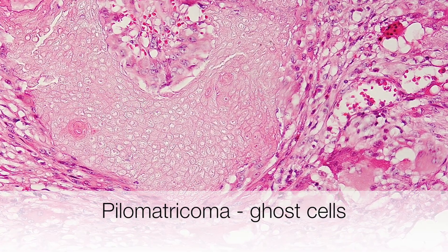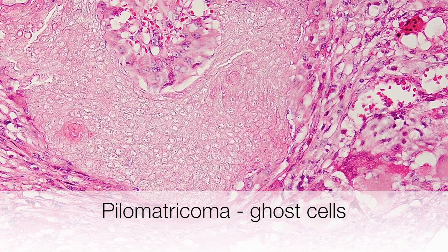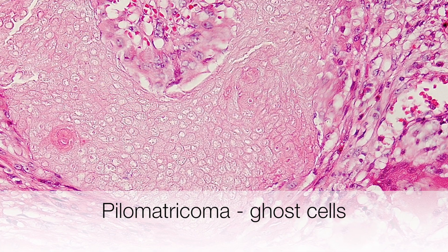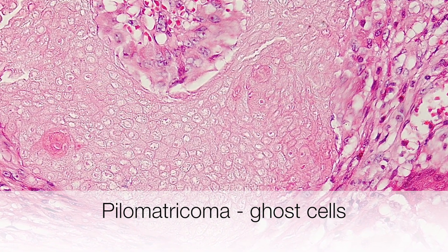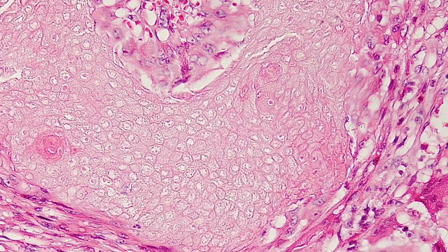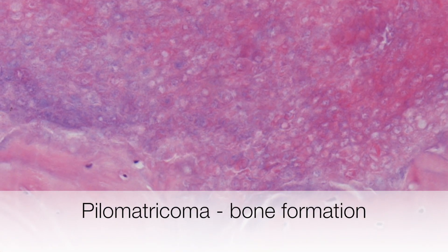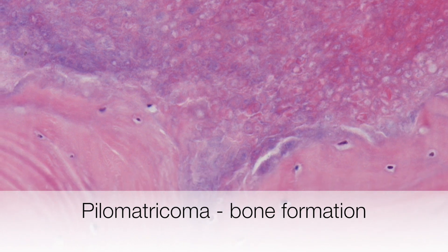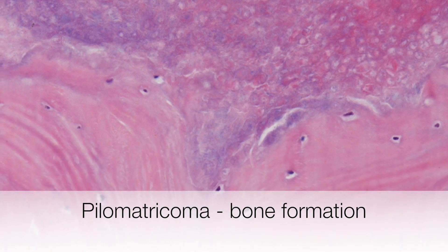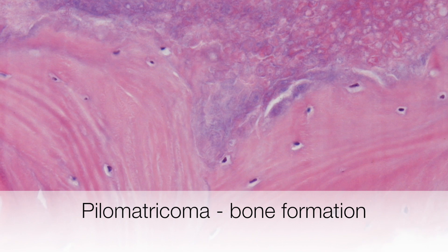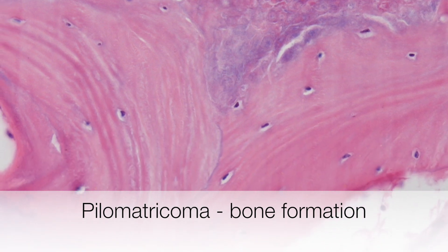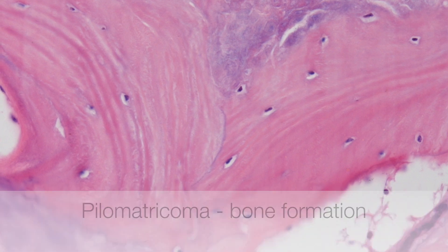This is a nice example of a sheet of ghost cells; the individual ghost cells are very well defined. At the top of the picture there are ghost cells that are starting to calcify, and the calcification has become so organised that it is now forming bone as we move to the bottom of the picture. You can see this is lamellar bone.